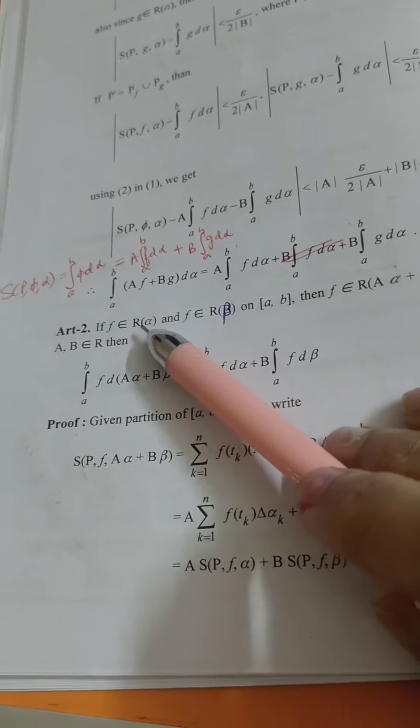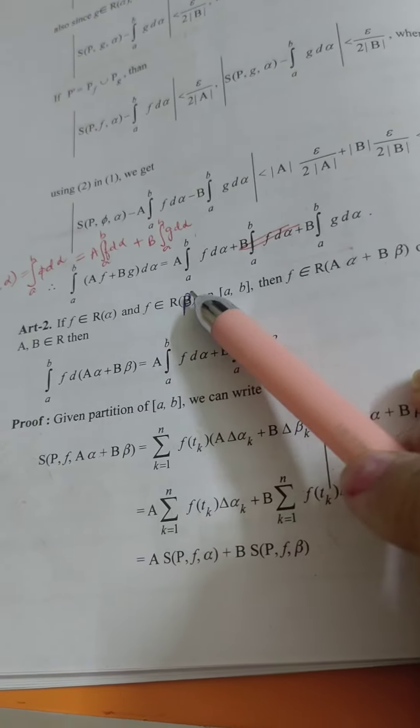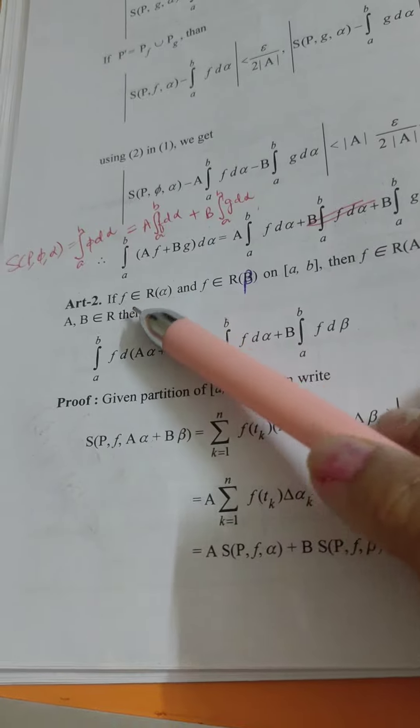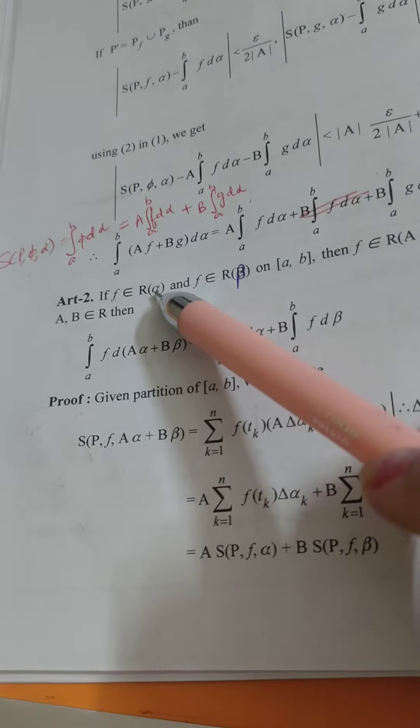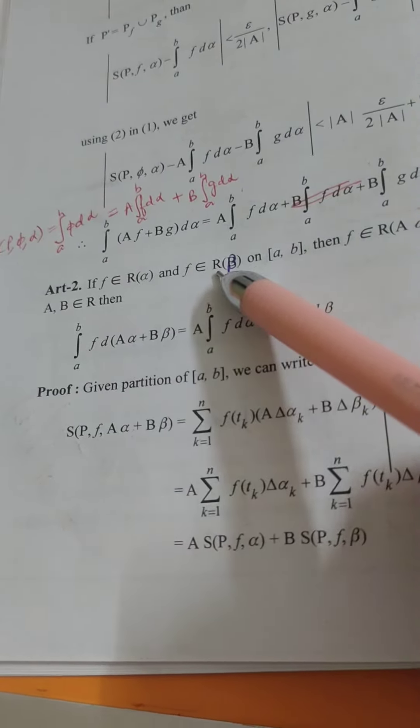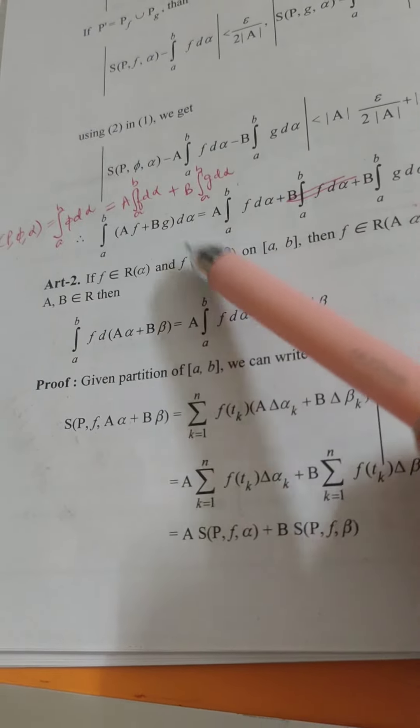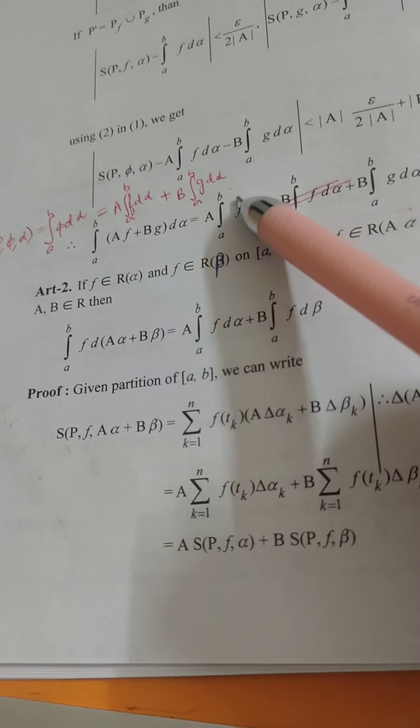So students, Article 2 me aapko show karna hai ki f is Riemann-Stieltjes integrable with respect to function alpha. Yaha par farak hai ki g ki jaga - previous article me g function liya tha na, g belongs to R(alpha).